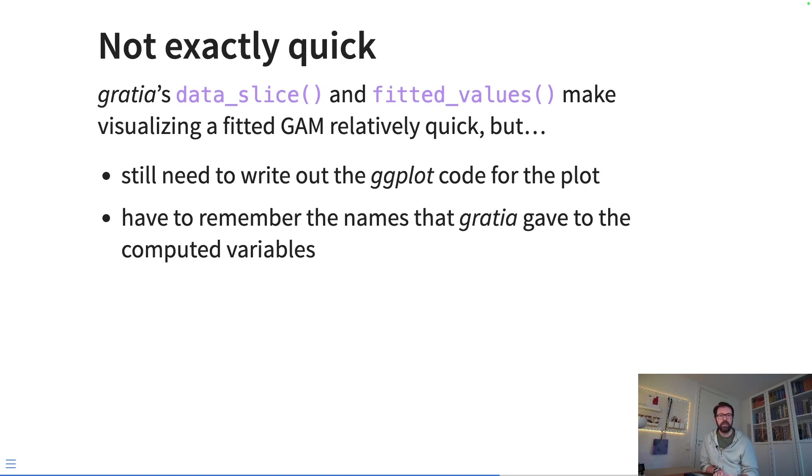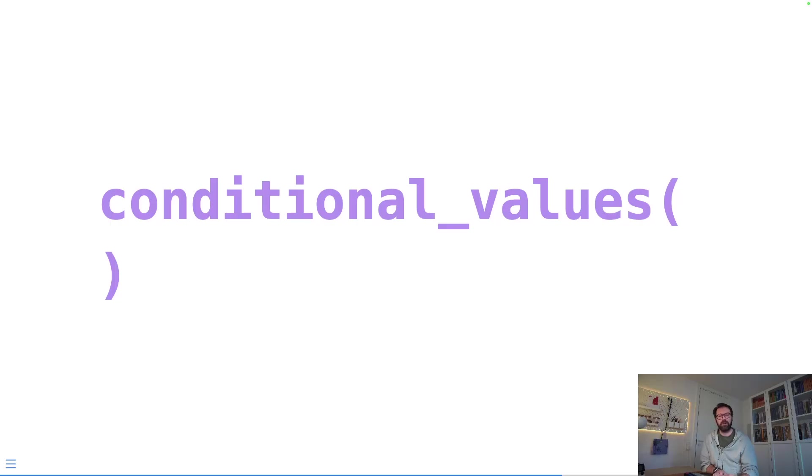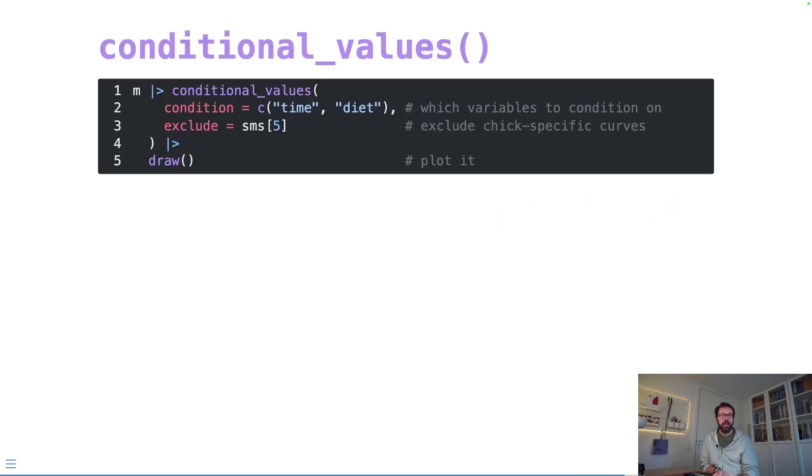And that's where conditional_values comes in. We can get exactly the same plot by using the conditional_values function. We have to tell it which variables we want to condition on, and so our main variable that we're conditioning on is time, but we also want to condition on diet too, so that we get a curve for each of the diets.